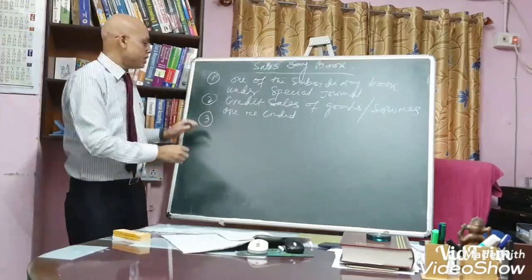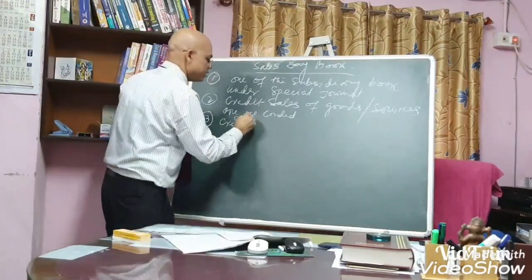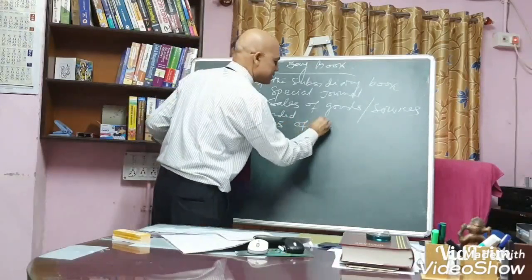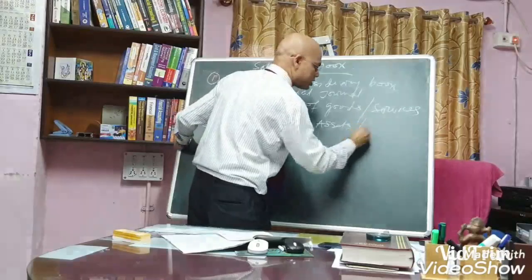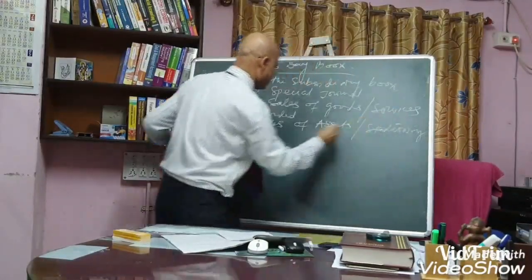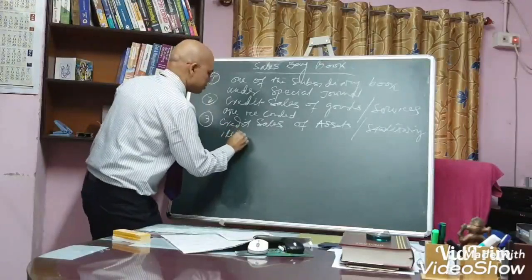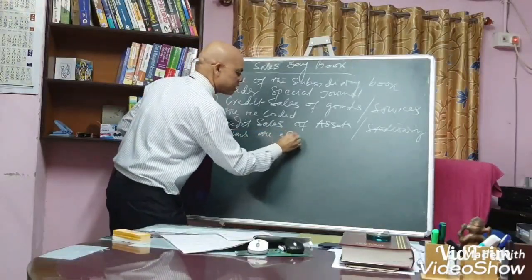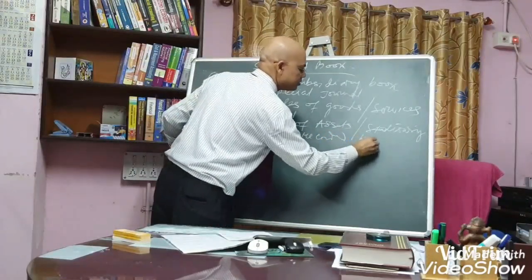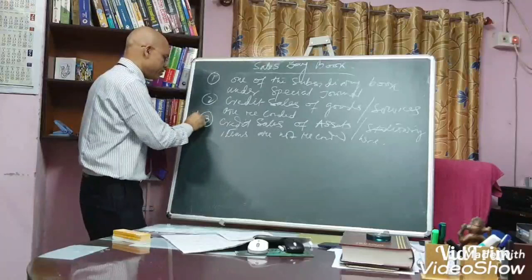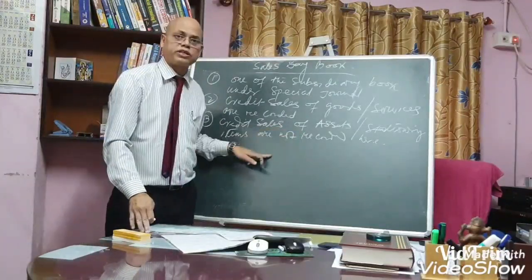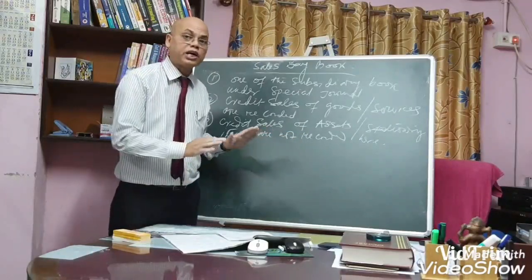Number three: credit sale of assets or stationery items are not recorded here. This is an important point. Where are these recorded? Credit sale of assets or stationery items are recorded under journal proper.